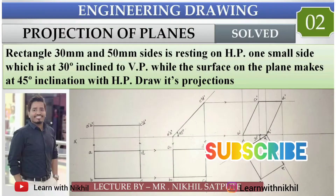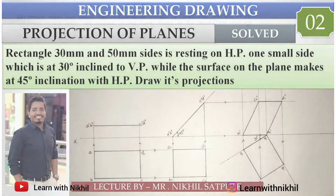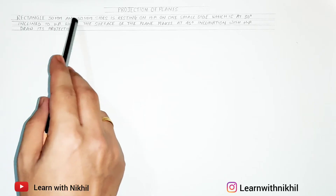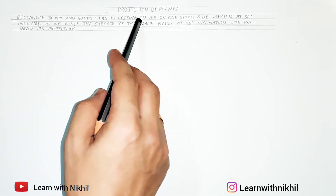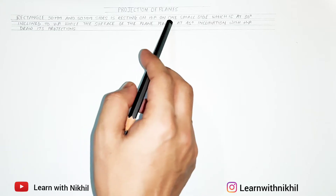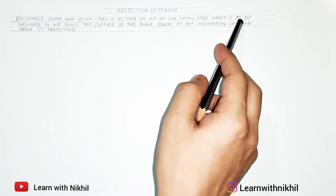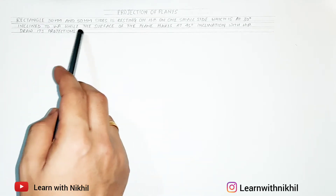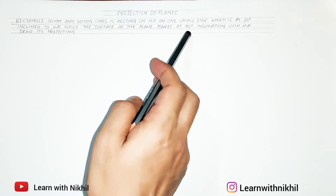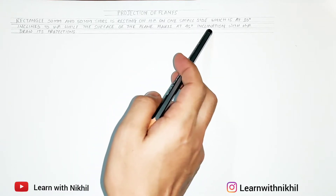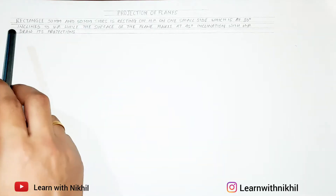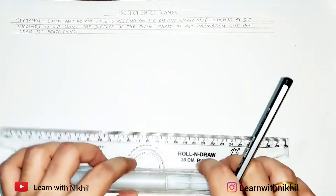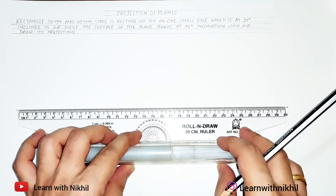Hello and welcome back to my channel Learn with Nikhil. Here we have taken a sum on projection of planes. The question says: a rectangle of 30 mm and 50 mm sides is resting on a horizontal plane on one small side, which is at 30 degrees inclined to the vertical plane, while the surface of the plane makes a 45 degree inclination with the horizontal plane. Draw its projections.